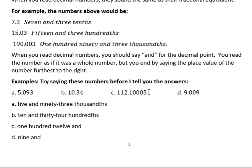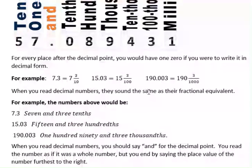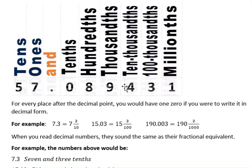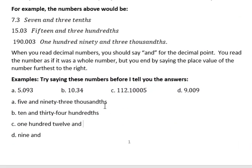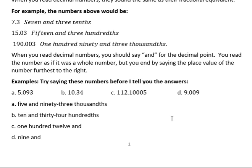The next number: one hundred twelve and... we have five places out. If you look at the chart, one, two, three, four, five places is the hundred-thousandths place. So the answer should end with 'hundred-thousandths.' Forgetting about the 112, you would read that decimal part as 'ten thousand five,' and then say five places out is 'hundred-thousandths.'